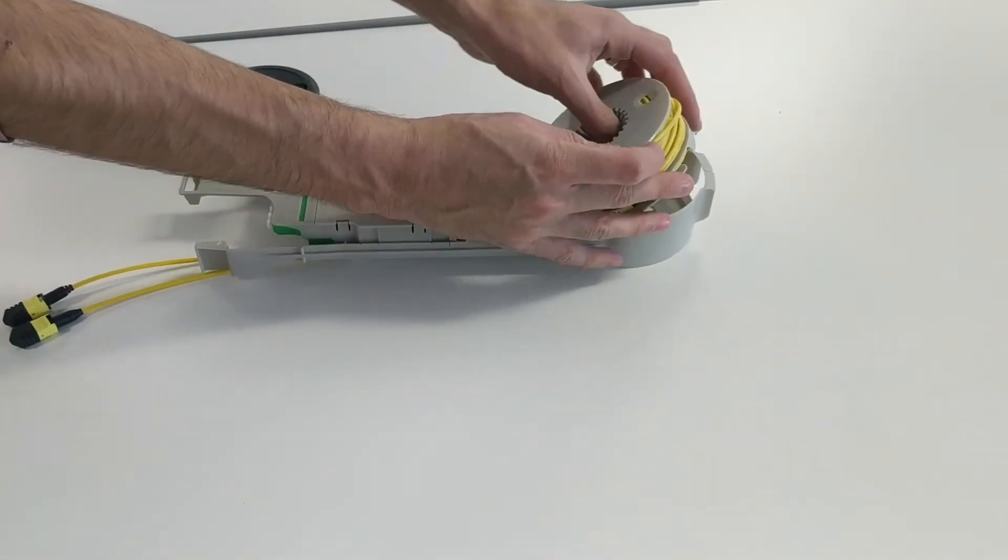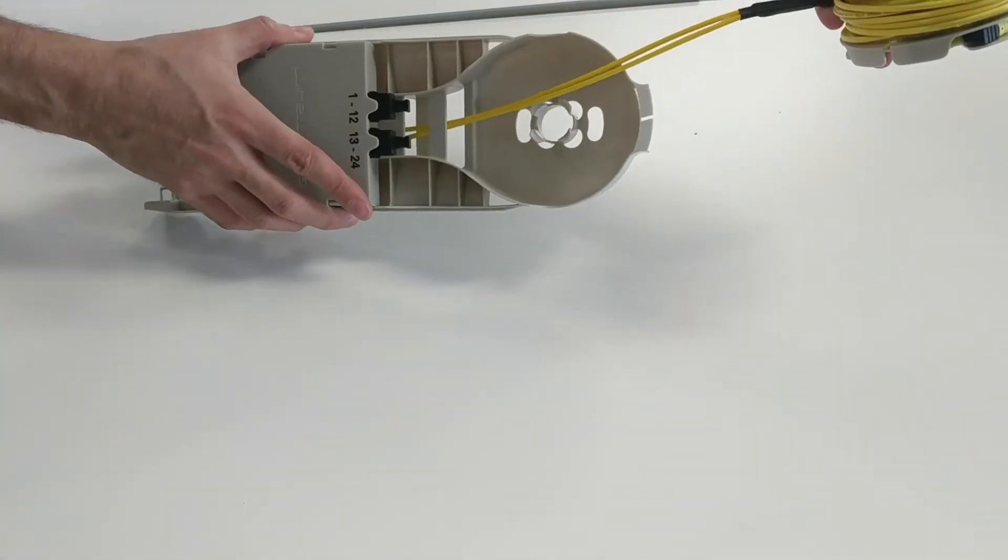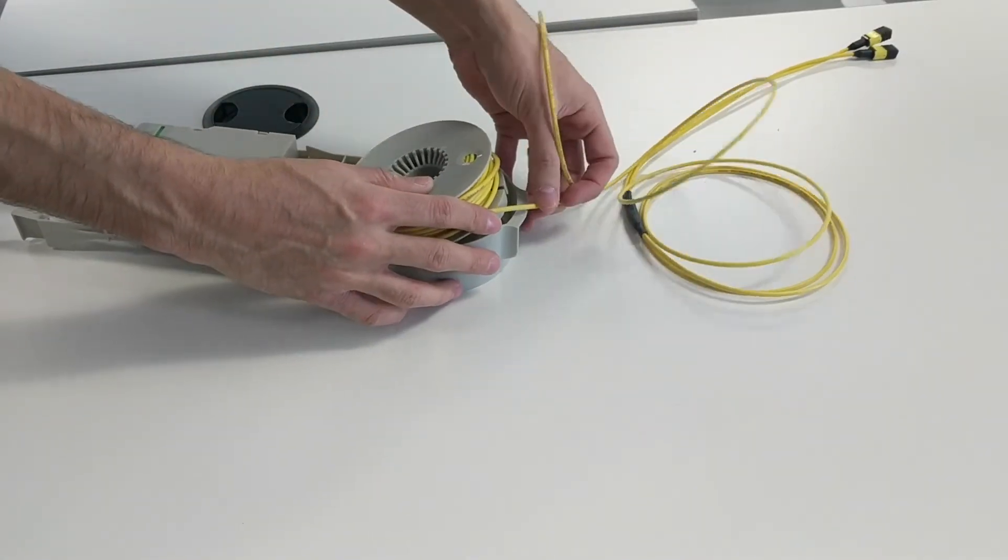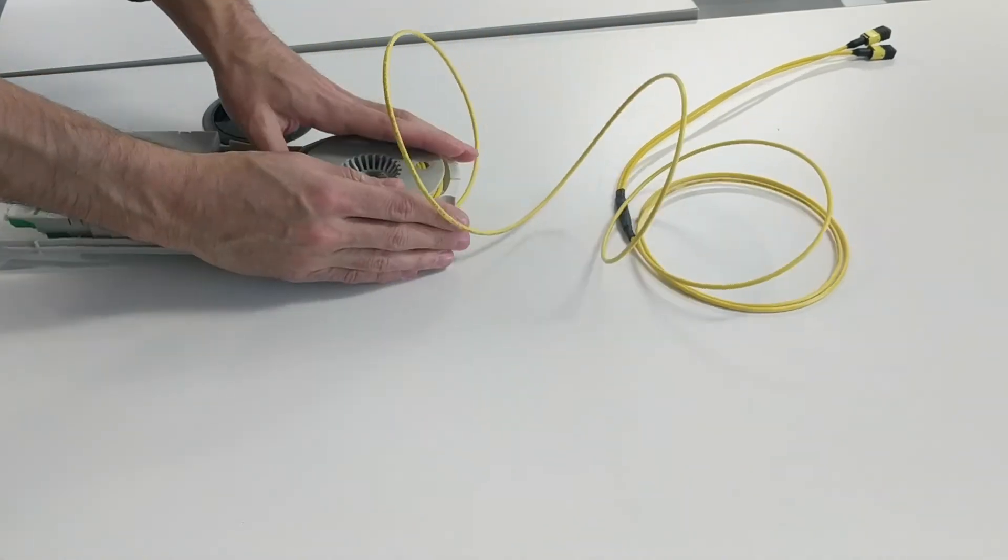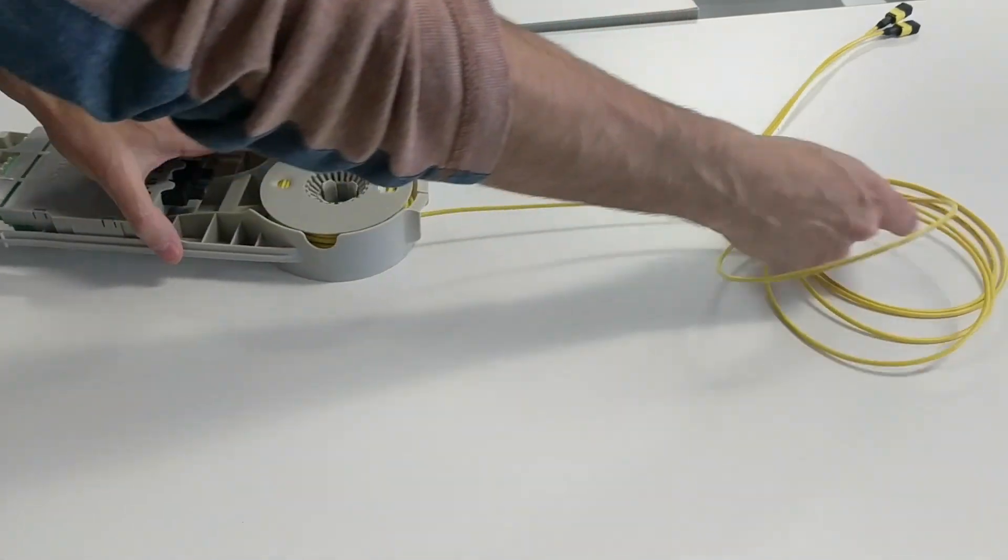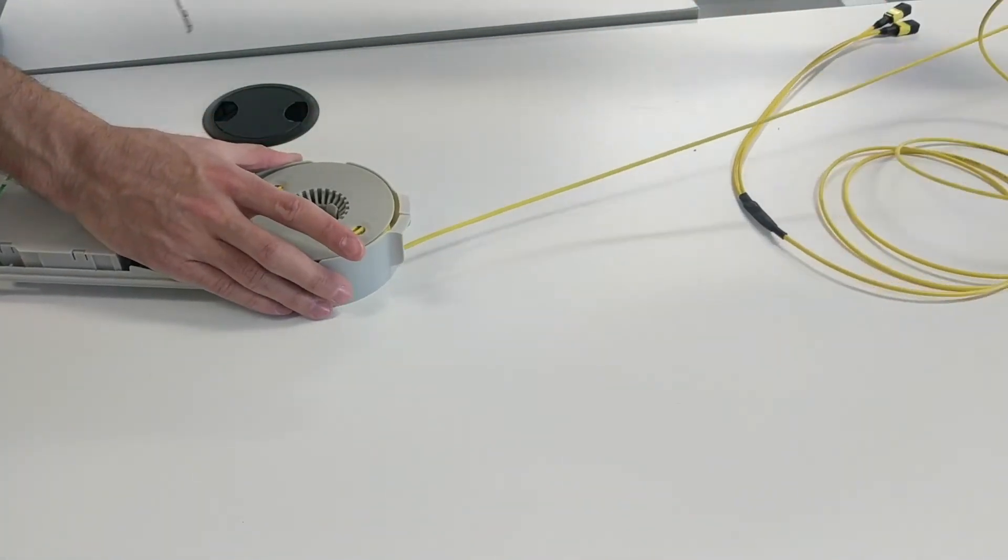Next, flip the FlexModule over to access the spool. Remove the spool from the base and pull back the cable assembly. Now you have successfully removed the cable assembly from the front access. You can now follow the procedures for a back pulling method shown already in this video.